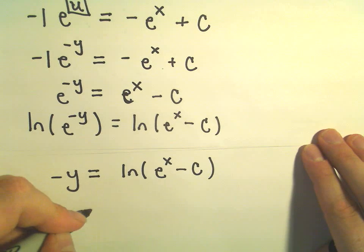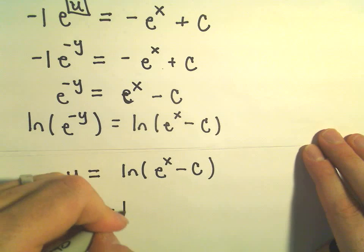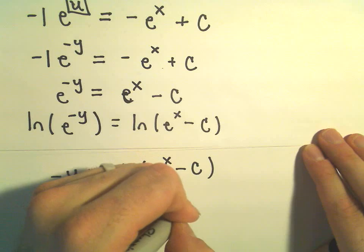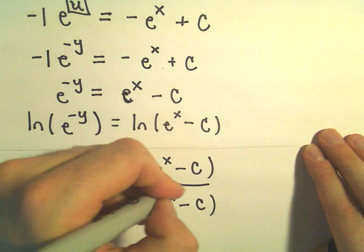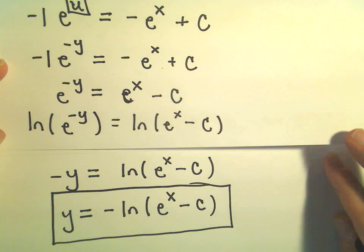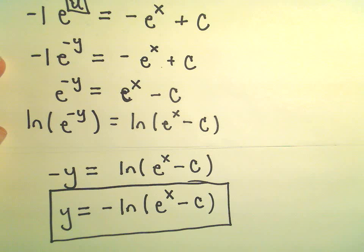Last but not least, I'm just going to multiply both sides by negative 1. So I'll get y equals negative ln of e to the x minus c. And to me, that would be a nice solution. You've expressed everything in terms of the dependent variable y. And that's all there is to it.